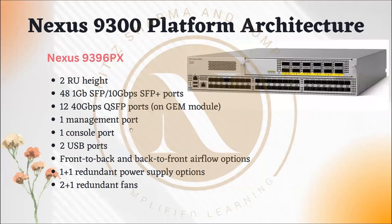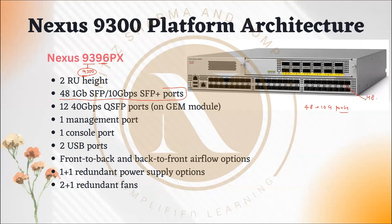The 9396 model: 9300 series, and 96 total ports. There are 48 one Gig or 10 Gbps SFP/SFP+ ports, plus 12 40 Gbps quad SFP ports. Using breakout cables: 12 into 4 equals 48 additional 10G connections. So 48 fixed plus 48 from breakout equals 96 — that's how it becomes the 9396PX.